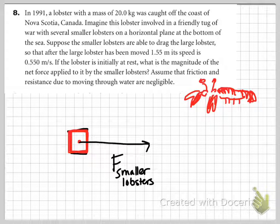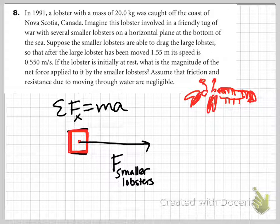So we're given its initial velocity, we're given its final velocity, and we're given its distance. We can find its acceleration. And once we do that, this is pretty easy.